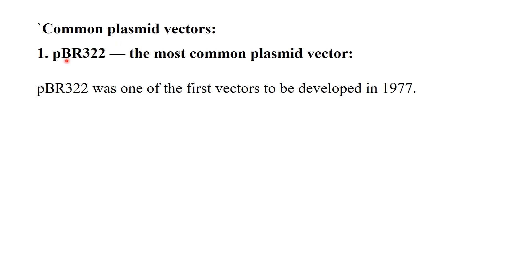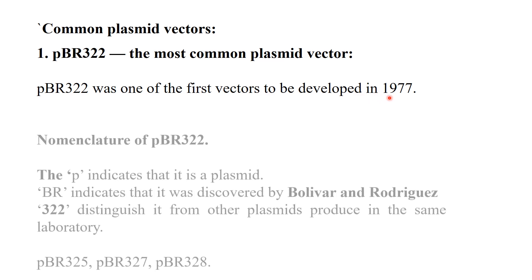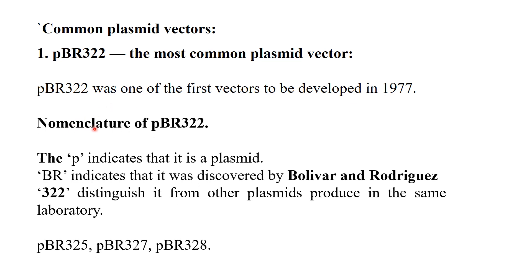The first artificial vector produced in the laboratory was pBR322, which was the most common plasmid vector. pBR322 was the first artificial vector synthesized, developed in 1977 by Bolivar and Rodriguez. In the nomenclature pBR322: 'p' stands for plasmid, 'BR' stands for the names of the scientists — Bolivar and Rodriguez — who discovered this plasmid.